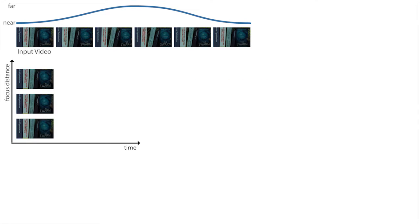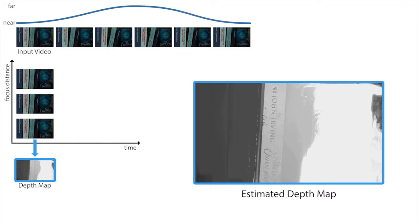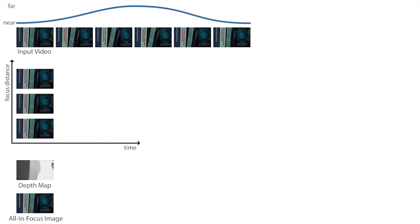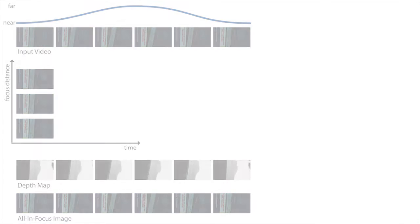We next compute a depth map from the aligned focus stack using depth from defocus. We then use this depth map to deconvolve the focus stack images for obtaining an all-on-focus image. We do this for all video frames in a multi-resolution, space-time coherent optimization procedure to obtain an all-on-focus RGBD video. For details, please refer to our paper.